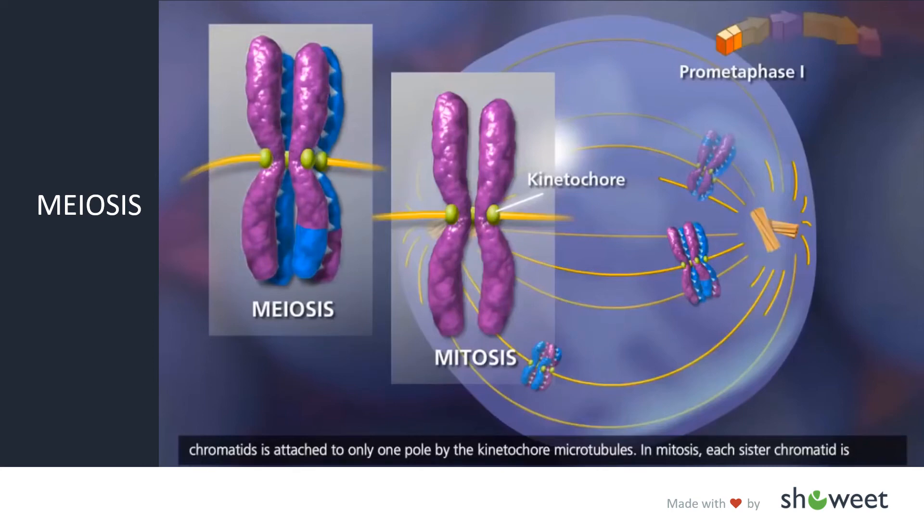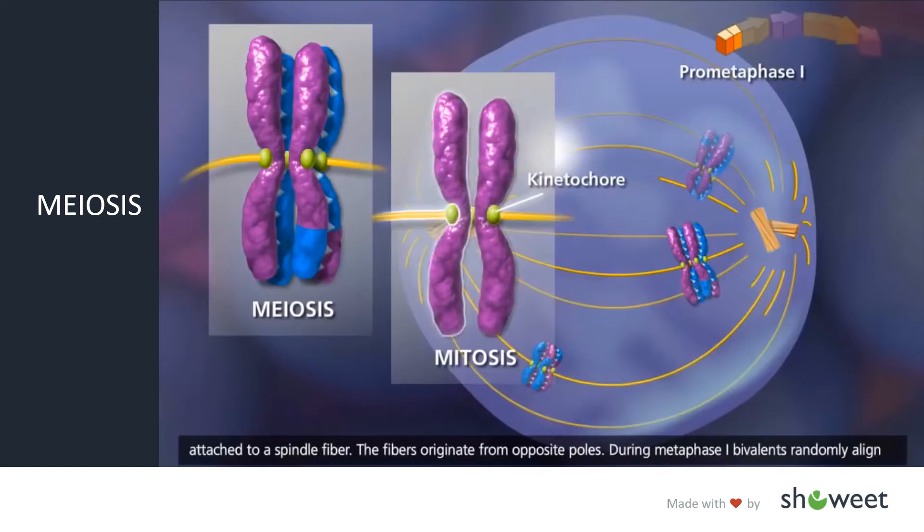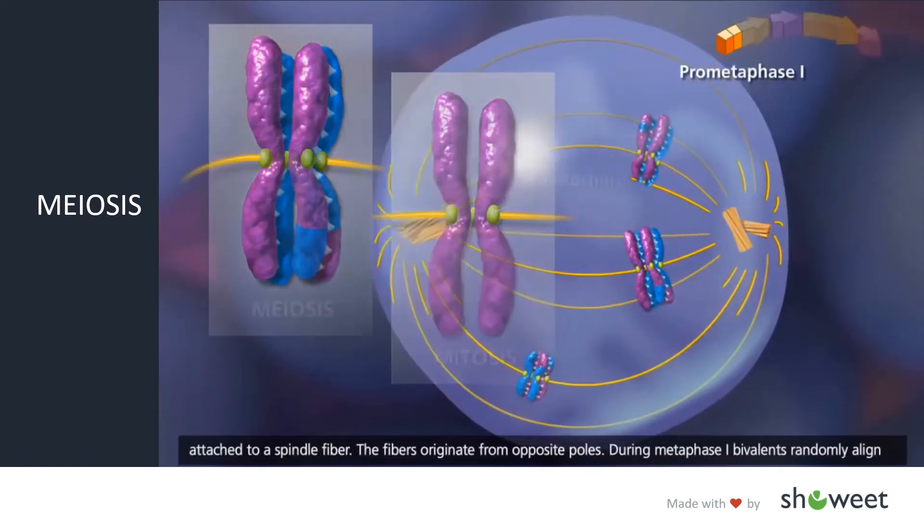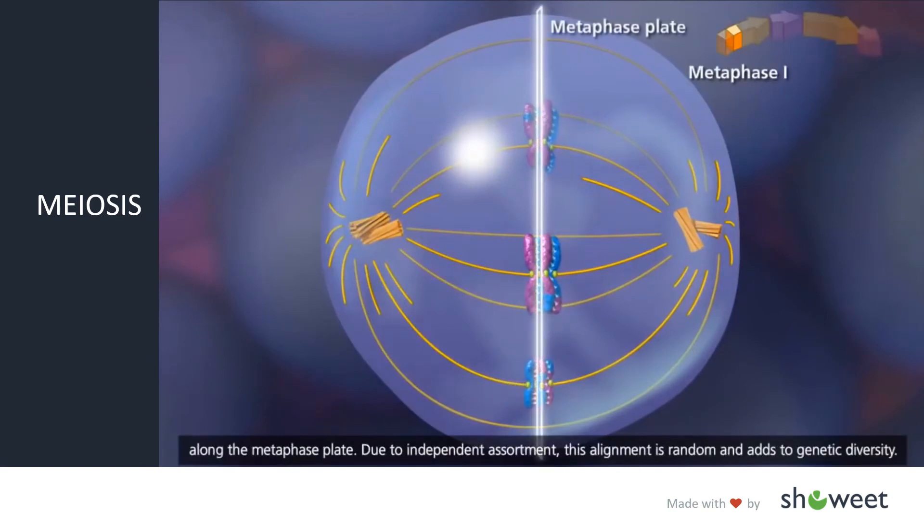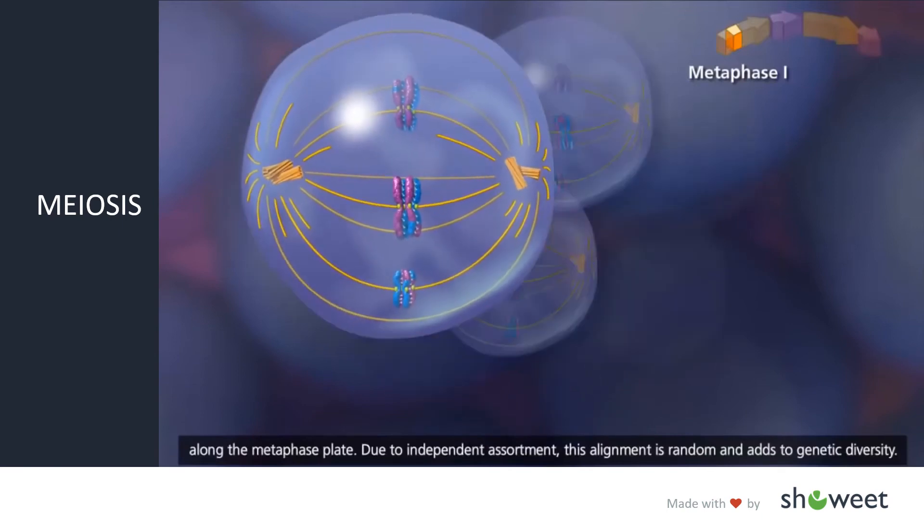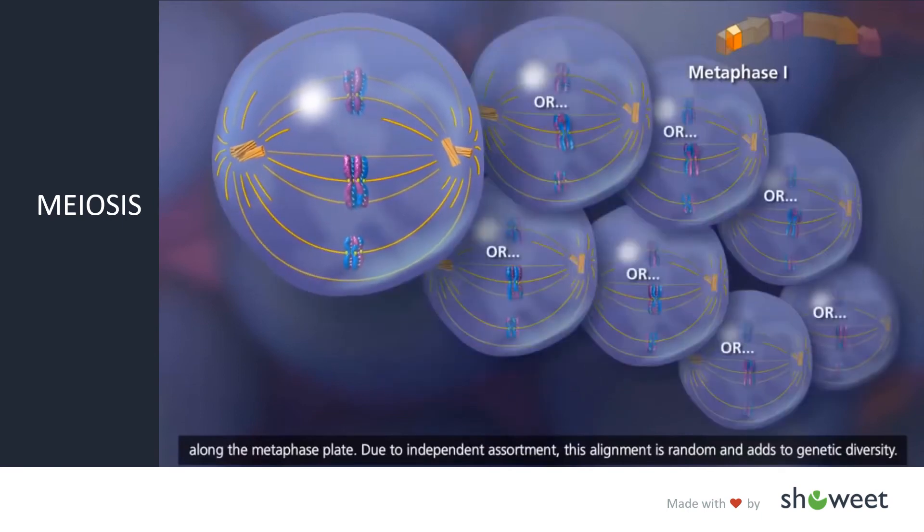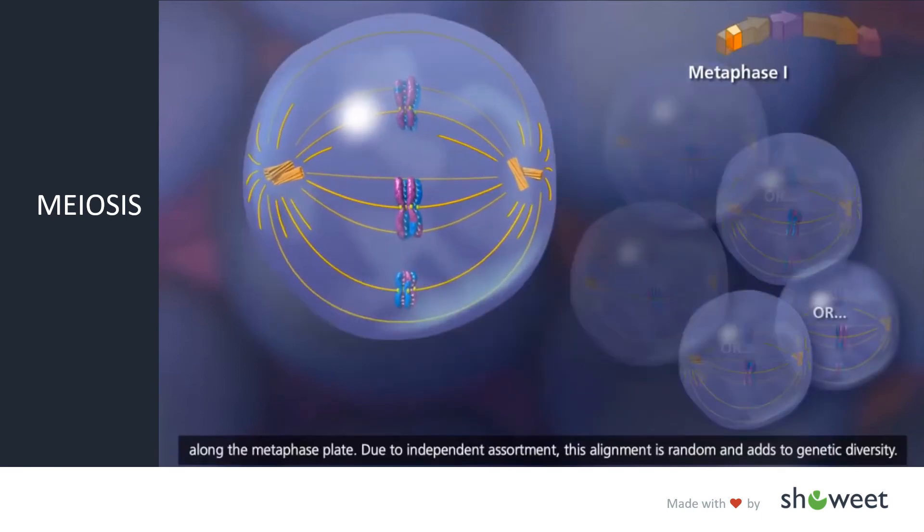In mitosis, each sister chromatid is attached to a spindle fiber. The fibers originate from opposite poles. During metaphase I, bivalents randomly align along the metaphase plate. Due to independent assortment, this alignment is random and adds to genetic diversity.